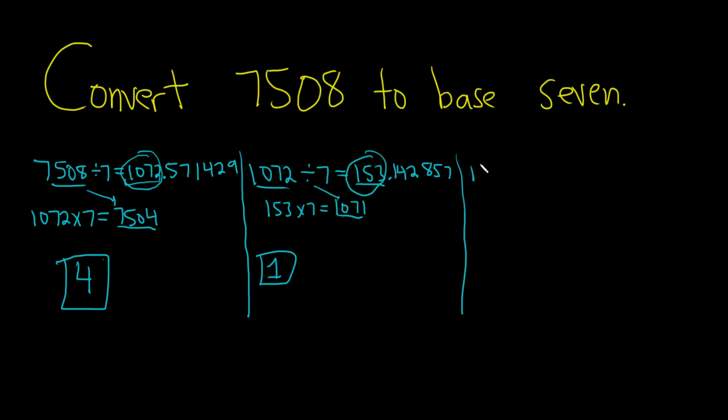Now we take 153, we divide that by 7. So I got 21.857. Let's take 21 times 7, which is 147. Then you subtract, and so you get 6. We're getting there. Let's do it again.